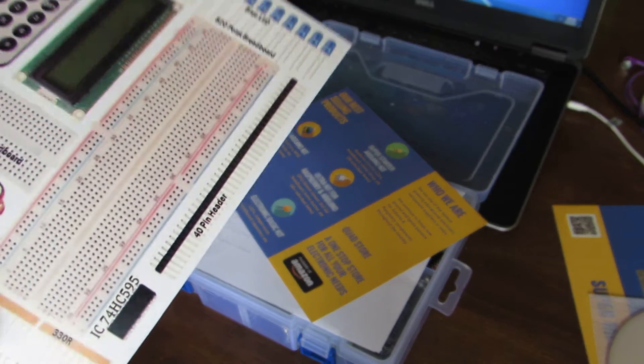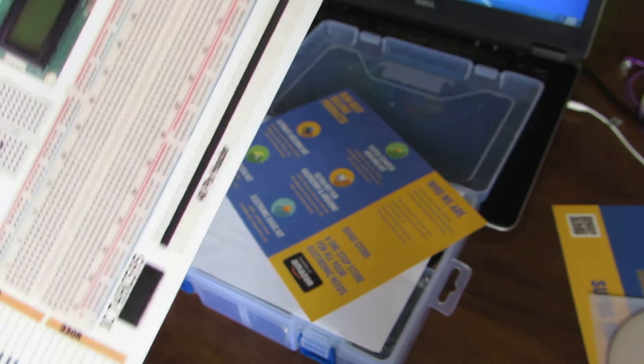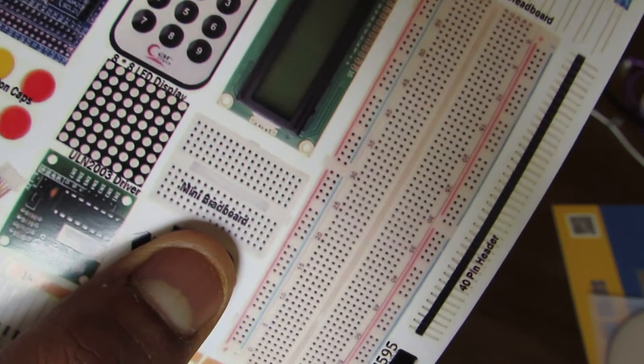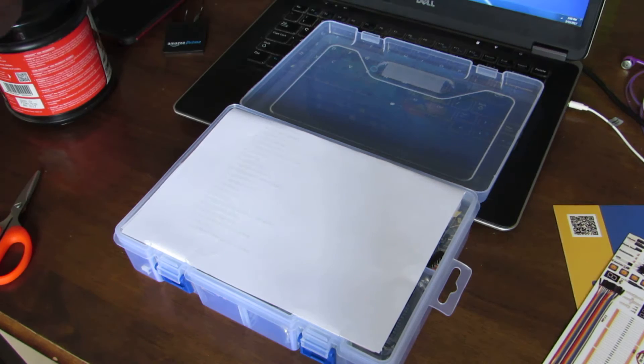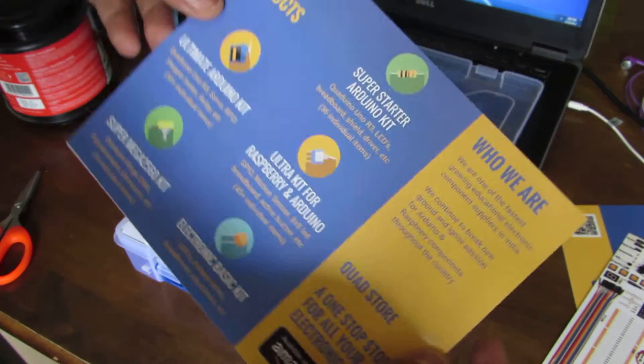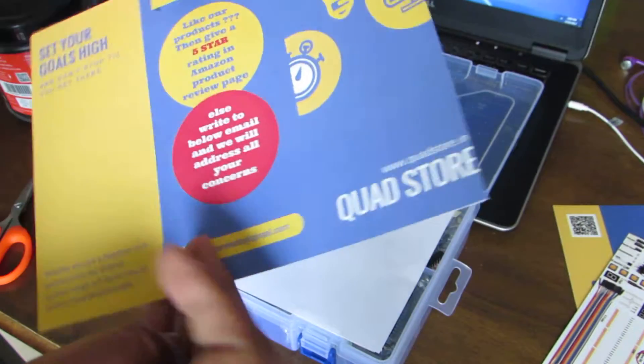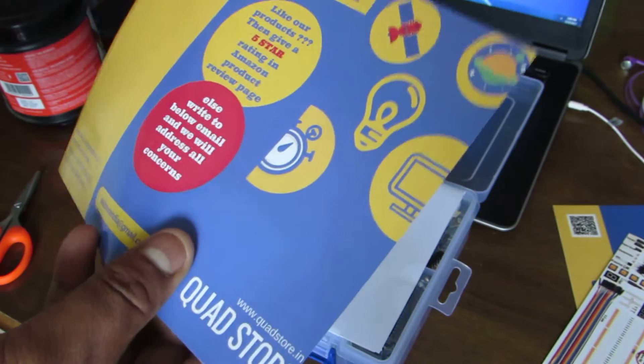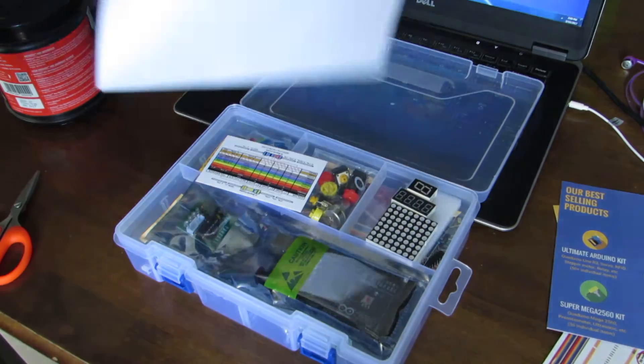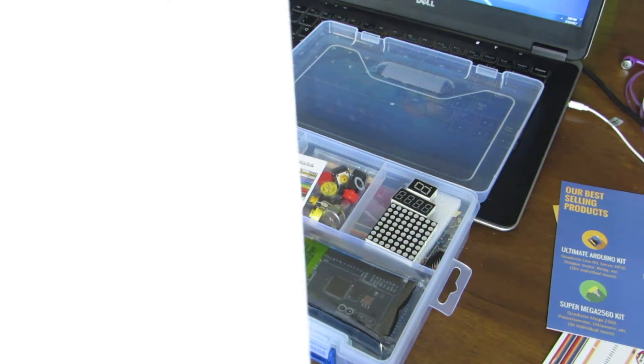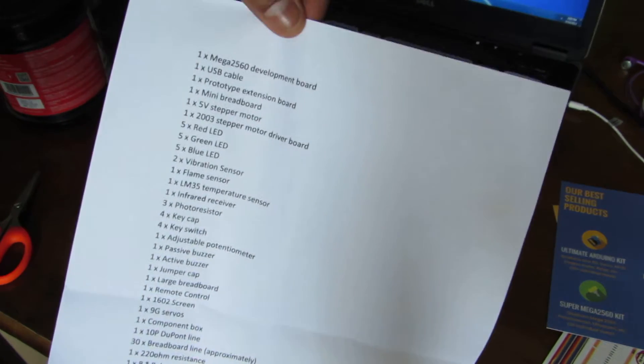For anyone doing anything on electronics, you need a breadboard. Here's a breadboard, it's a big one. And in case you want to have a secondary one, here's the small breadboard. This is kind of telling what all you need. They're saying what are their best-selling products, it's more like an advertisement pamphlet. Again, printout of what all stuff they're giving. I'll read it out later.